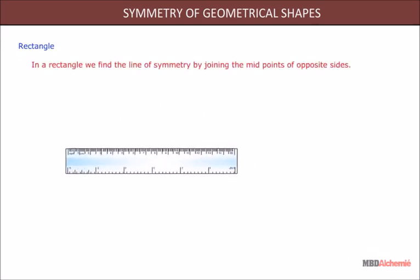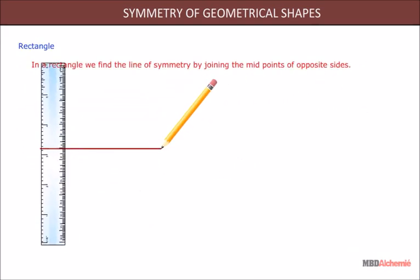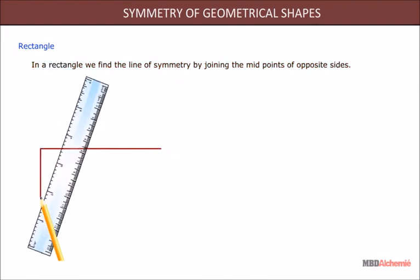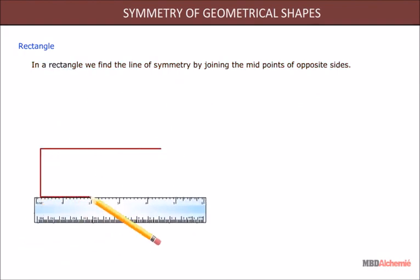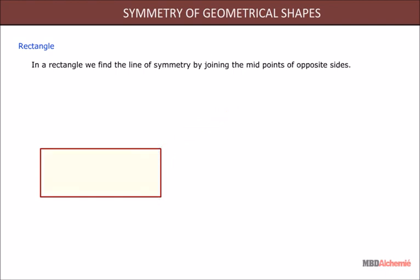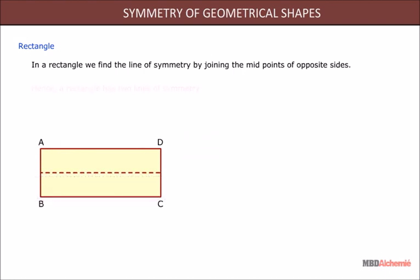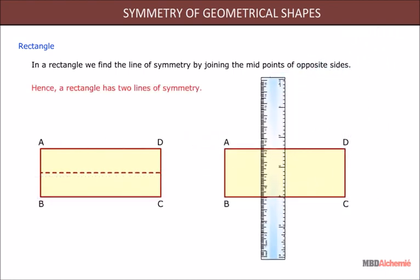In a rectangle, we find the line of symmetry by joining the midpoints of opposite sides. Hence, a rectangle has two lines of symmetry.